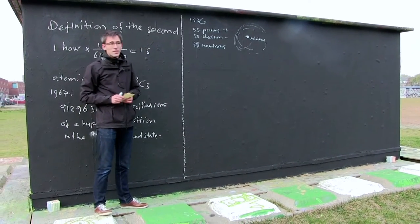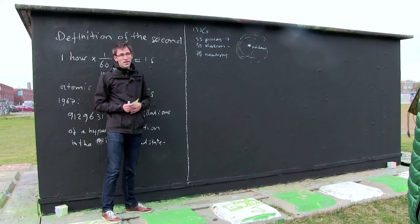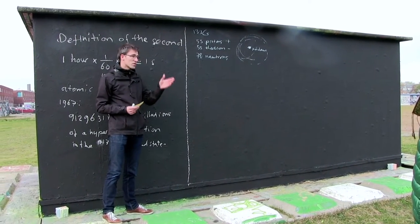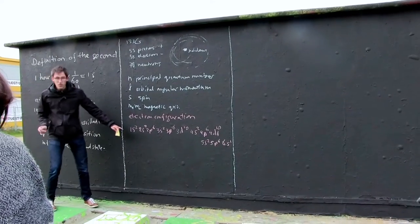So actually, this means you have quantized energy levels in an atom, and the only difference between these quantum energy levels is the quantum numbers. What I've done, I've written here the kind of code for the electronic structure of the cesium atom.